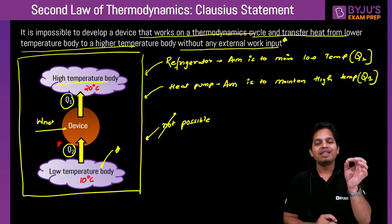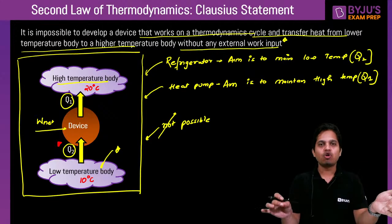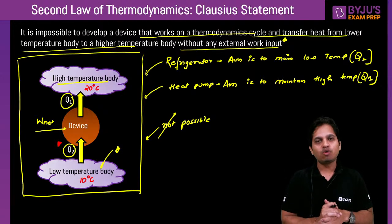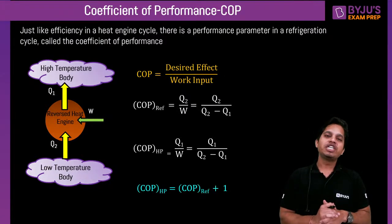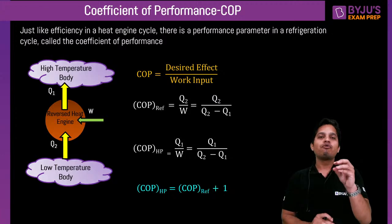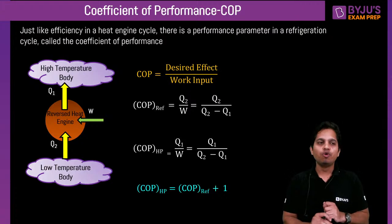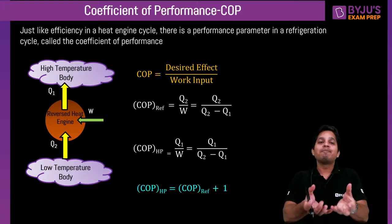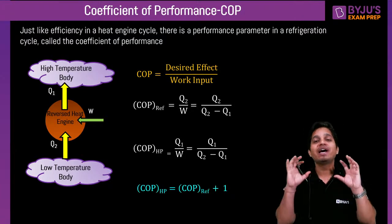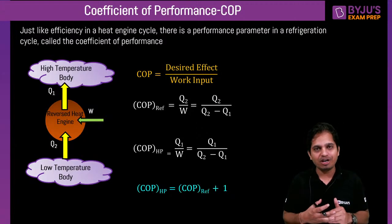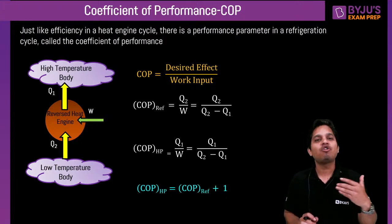So: heat engine is based on Kelvin-Planck's statement. Refrigerator and heat pump are based on Clausius statement. For work-producing devices like heat engines, we calculate efficiency. For work-absorbing devices — refrigerator and heat pump receive work input — we define Coefficient of Performance (COP).